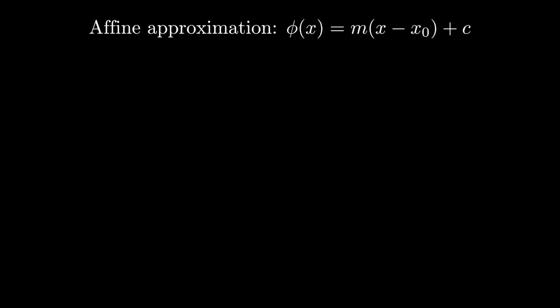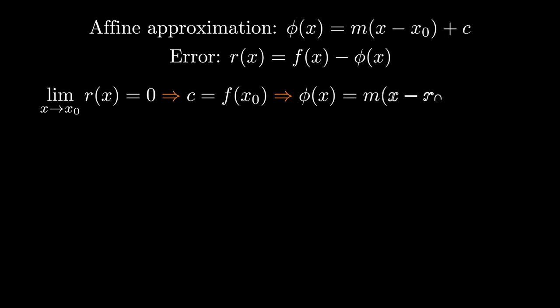This is a line of reasoning that we can formalize. We start with our affine approximation in terms of m and c. We introduce an error function r that is the difference between our target f and the affine approximation phi. Our first goal is to make the error go to zero as x goes to x0. That's something we can achieve by setting c equal to f of x0. That allows us to rewrite our affine approximation just in terms of m.